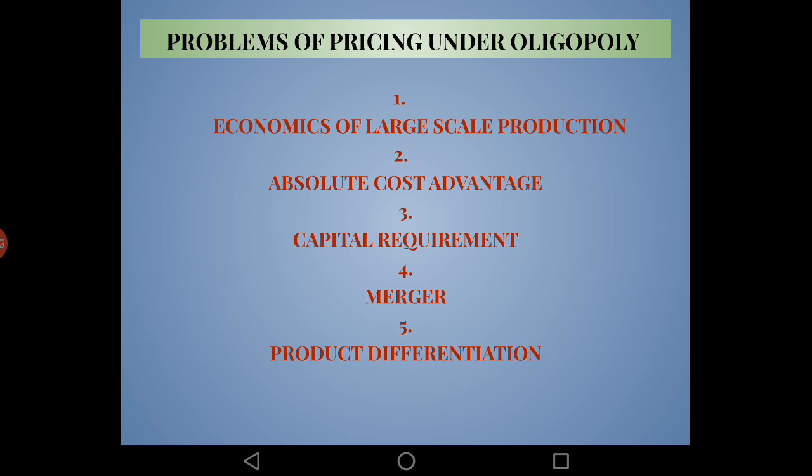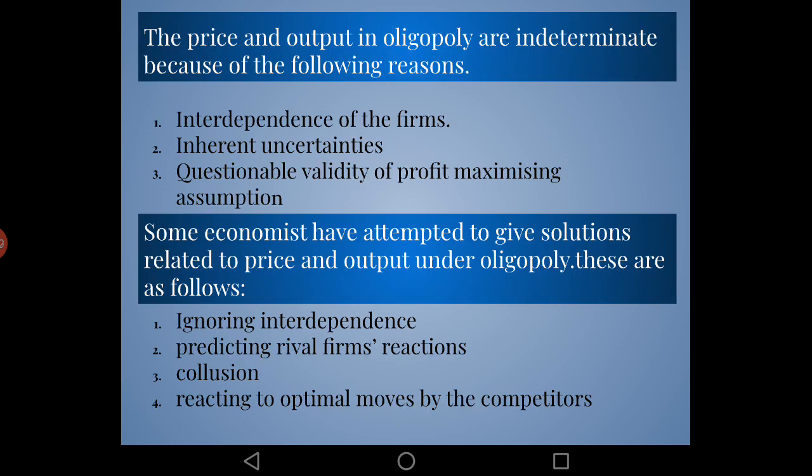We have seen that under oligopoly, demand is indeterminate — price and output are indeterminate. The first reason is interdependence of firms. No firm under oligopoly knows the reaction of rival firms, and therefore there is interdependence. All firms depend on each other. If one firm lowers its price, it does not know how other firms will react regarding their prices.